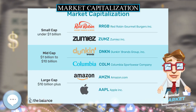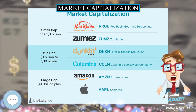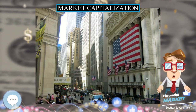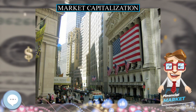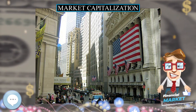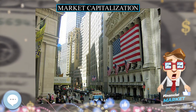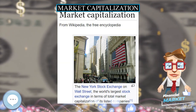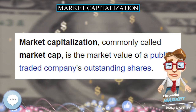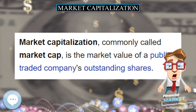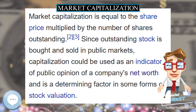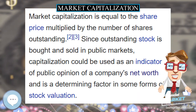Market cap is given by the formula MC = N × P, where MC is the market capitalization, N is the number of shares outstanding, and P is the closing price per share. For example, if a company has 4 million shares outstanding and the closing price per share is $20, its market capitalization is then $80 million.